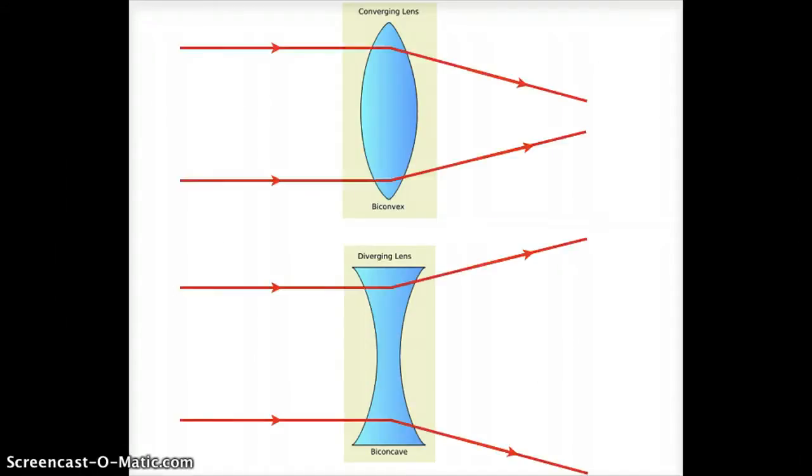We've seen this in our past couple of lectures, but we haven't really talked about why. Why is it that these two different shapes have these different effects? To understand this,